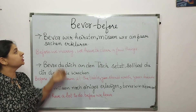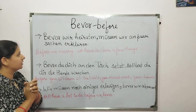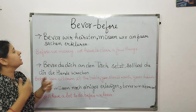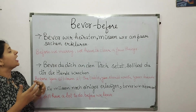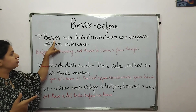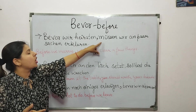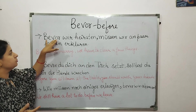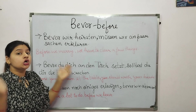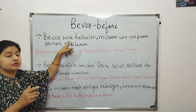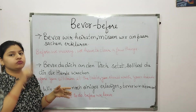Now moving to the second conjunction: bevor, which means 'before.' For example: 'Bevor wir heiraten, müssen wir ein paar Sachen erklären.' Before we marry, we have to clear a few things. Because of the conjunction bevor, the verb heiraten goes to the end, then there is a comma, and after the comma the verb comes first. No subject after the comma — if you put a subject there, it will be wrong.